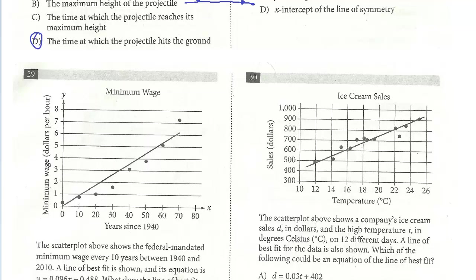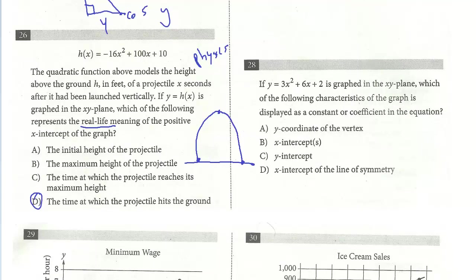All right. Let's take a look at the last question. We're on question 28. If y equals 3x squared plus 6x plus 2 is graphed to the xy plane, which of the following characteristics of the graph is displayed as a constant or a coefficient in the equation? This is another question where it's just kind of understanding what the terminology is. But this is the standard form of a parabola.